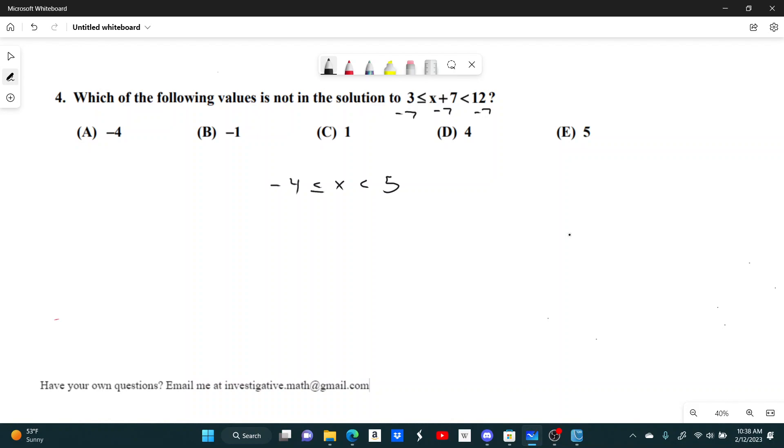We just have to find which one of these answer choices doesn't fit into this inequality. So let's see. Negative 4 is less than or equal to negative 4, so that's fine. Negative 1, that's just in between these numbers, and so is 1 and so is 4.